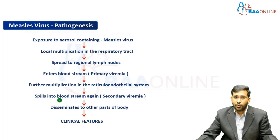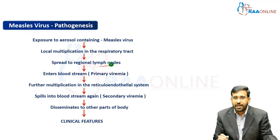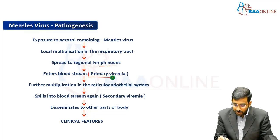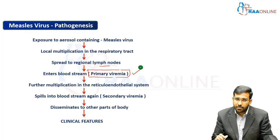When we inhale the virus, it goes into contact with the respiratory mucosa. From the respiratory mucosa, it goes to the regional lymph node, where there is multiplication. Again, there is a spill over into the blood — this is called primary viremia. So from the lymph node, the virus spills into the blood, that's the primary viremia.